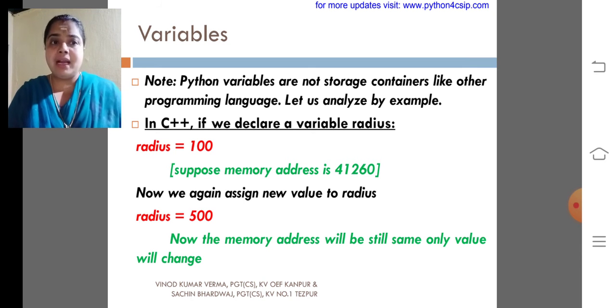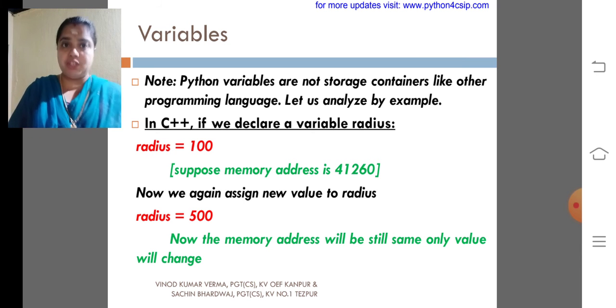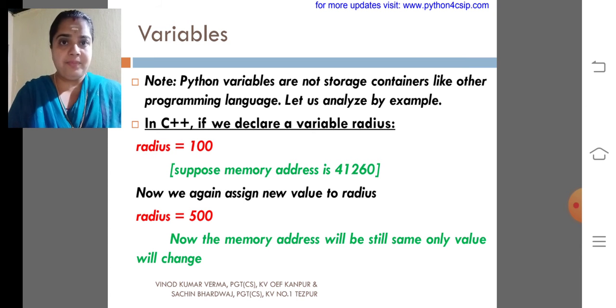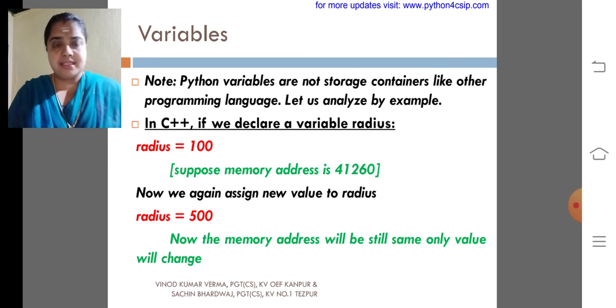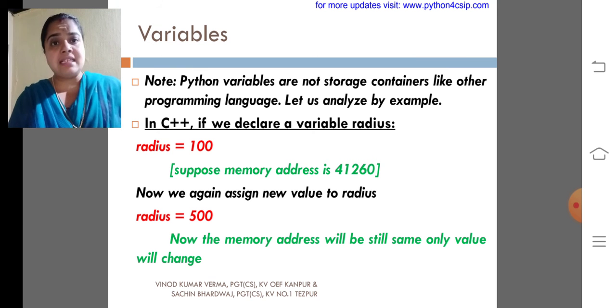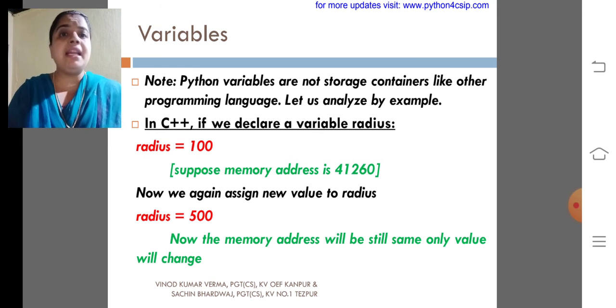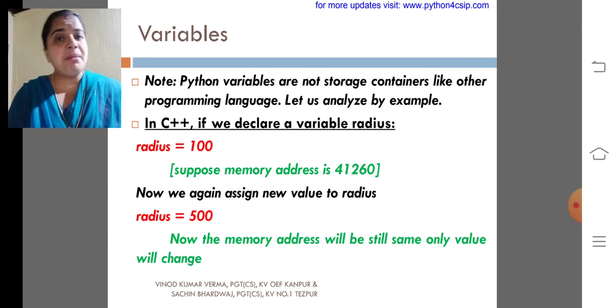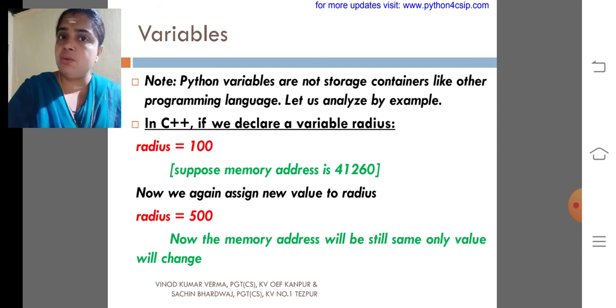Now we again assign a new value to the radius 500. Now the memory address will be still the same, only the value will be changed. That is, if we are storing a radius value that is 100, that is assigned to a variable called radius. So when we are giving that, the interpreter or compiler will store the value in a particular memory address. That we already studied, each and every value is stored in a memory address.